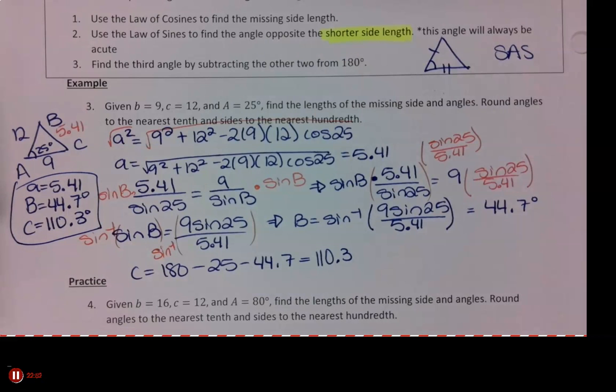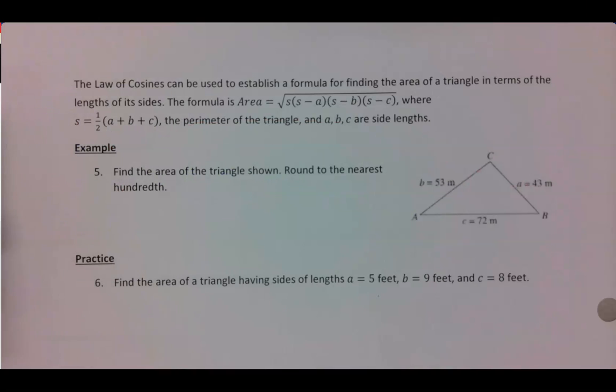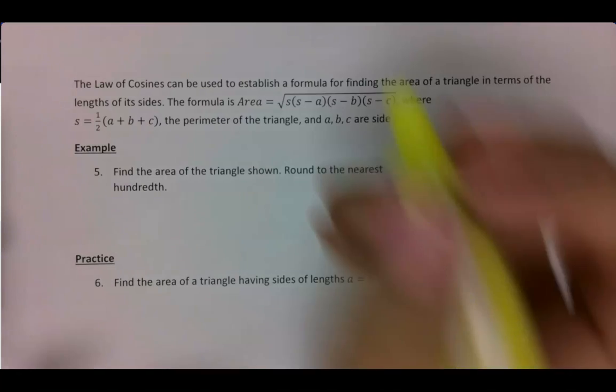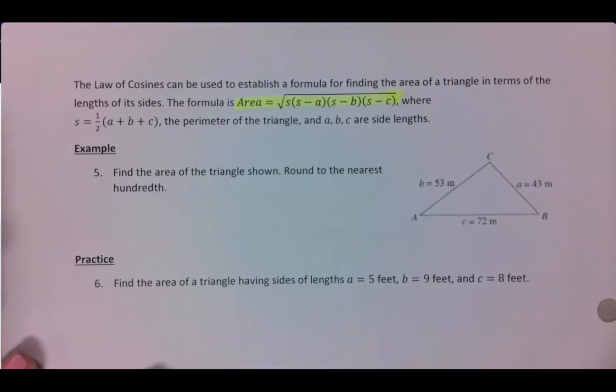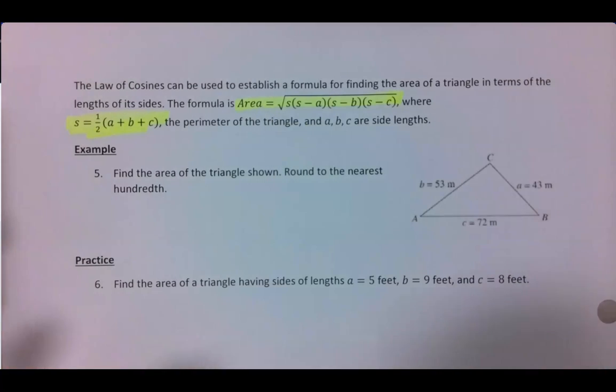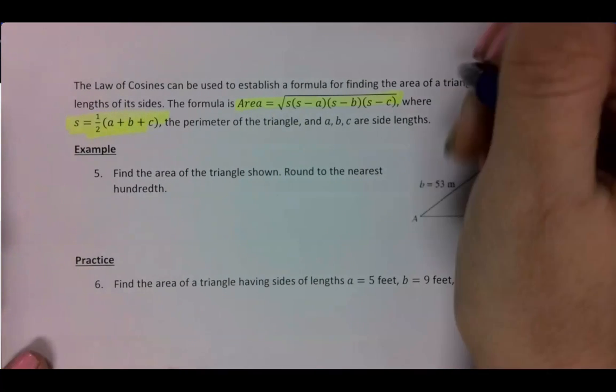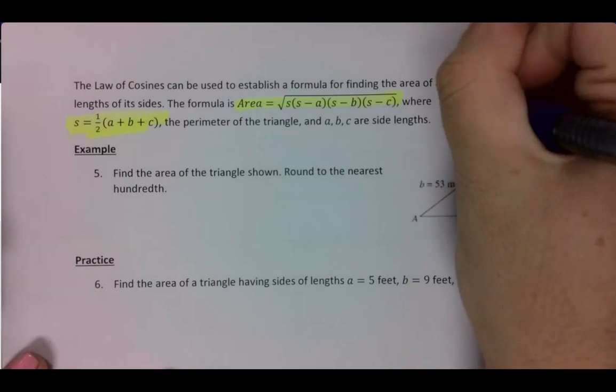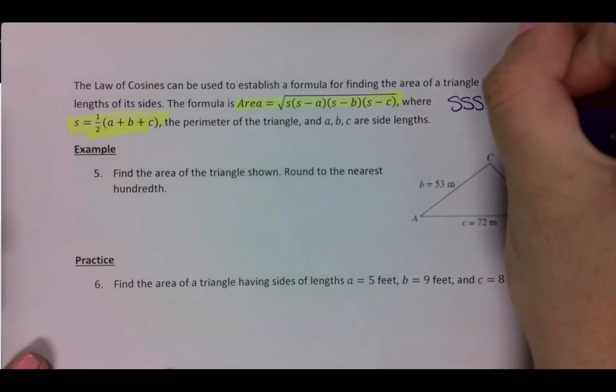All right, so when I have a side angle side triangle, I want to use law of cosines at the very beginning to find my first side length. And then I always do law of sines with the shorter side length on side angle side. Okay, so the law of cosines is used to develop another area formula. This one is the square root of s times s minus a times s minus b times s minus c, where s is found by adding all the side lengths together and dividing by one half. This is useful for when we have a triangle and we are given three side lengths and we need to find our area.